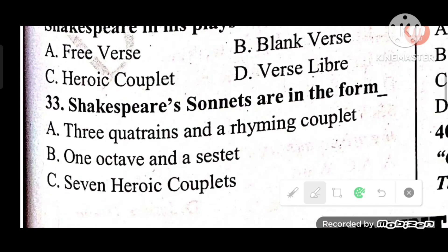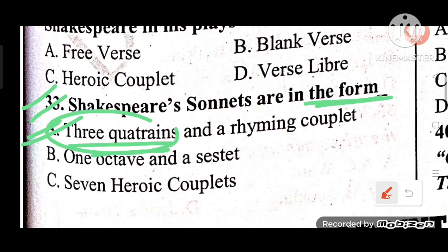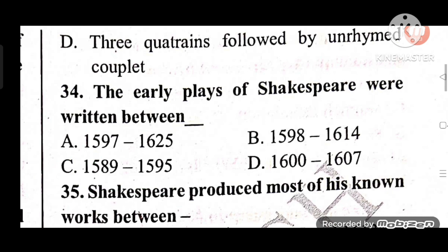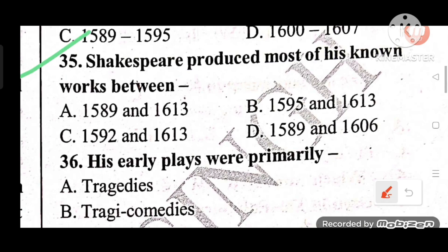Question 33: Shakespeare's sonnets are in what form? The answer is A — three quatrains and a rhyming couplet. Question 34: Shakespeare's early plays were written between which years? The answer is C — 1589 to 1595. Question 35: Shakespeare produced most of his known work between which years? The answer is C — 1589 to 1613.